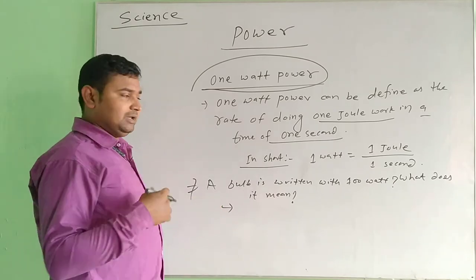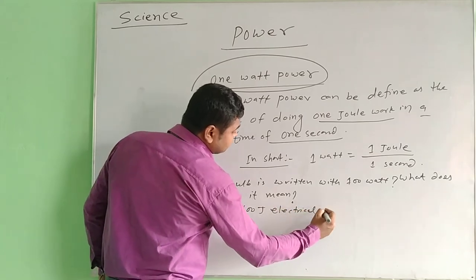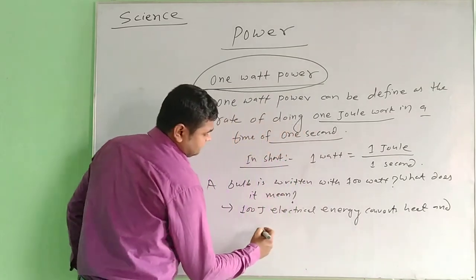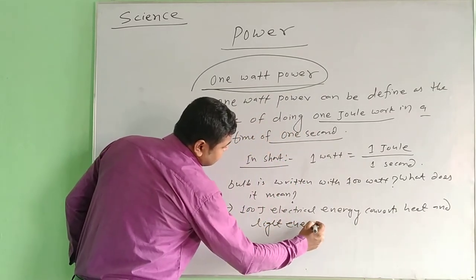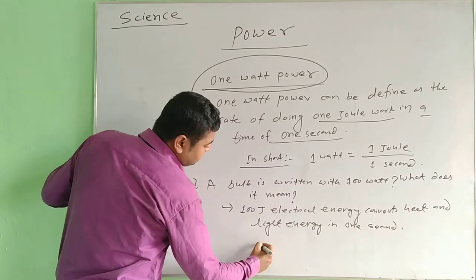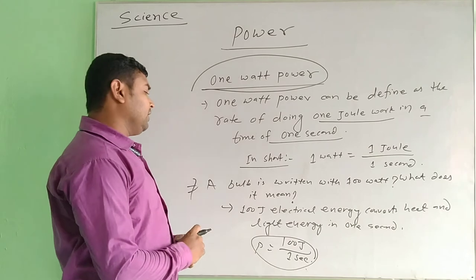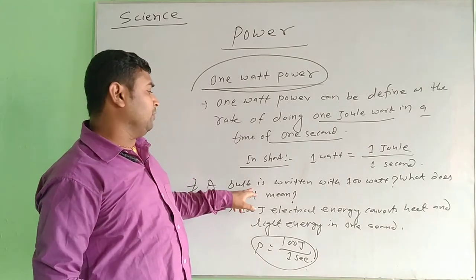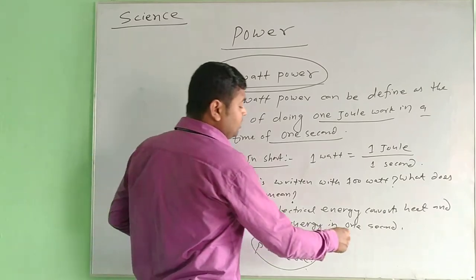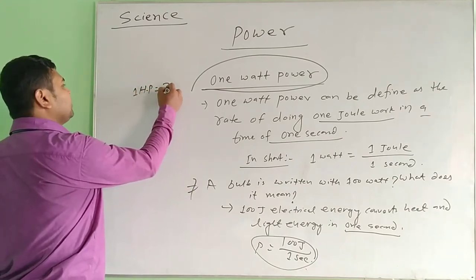So 100 joule of electrical energy is converted in one second — that is what 100 watt power means. Also, 1 horsepower (HP) is equal to 746 watt. We can do some questions from this.